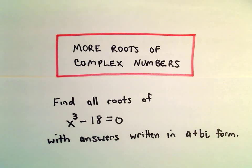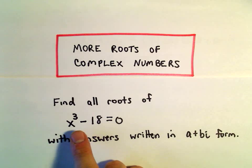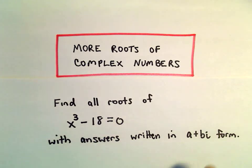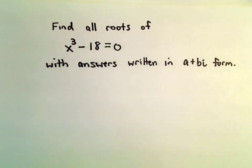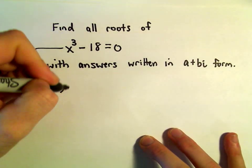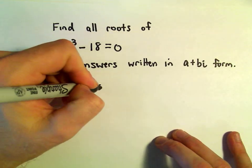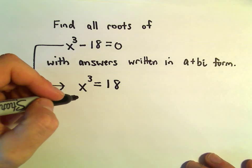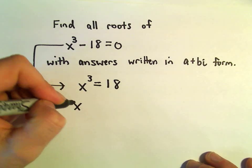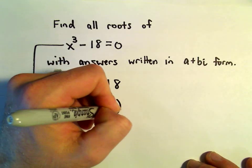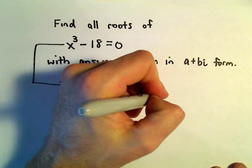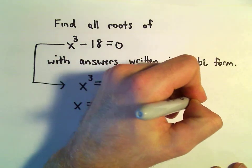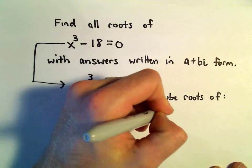In this video, we're going to find all roots of the equation x cubed minus 18 equals 0 and write them in complex form. The first thing we'll do is think about this equation. If we add 18 to both sides, that gives us x cubed equals 18. If we take the cube root of both sides, we get x equals 18 to the 1/3 power. So we're looking for the cube roots of the number 18.